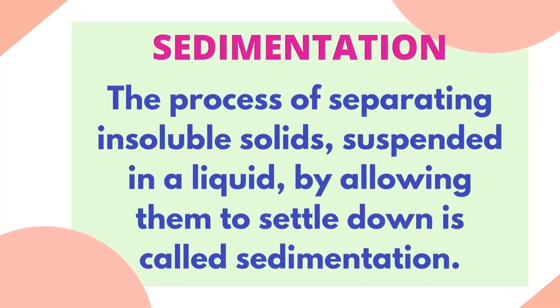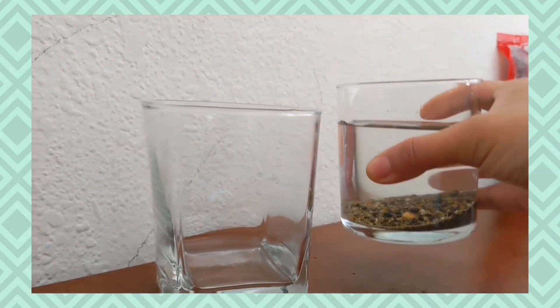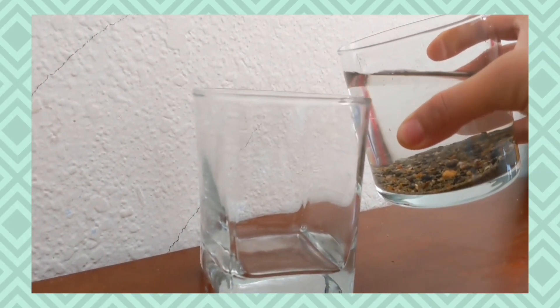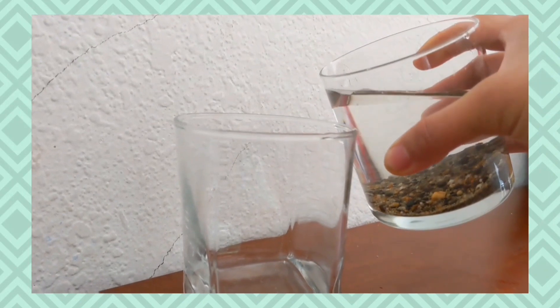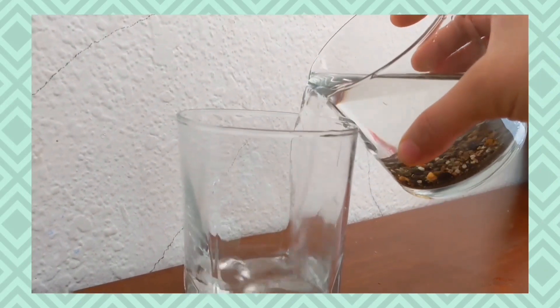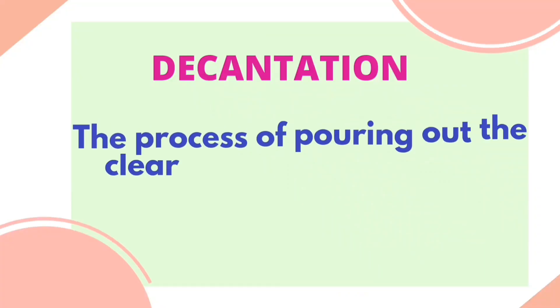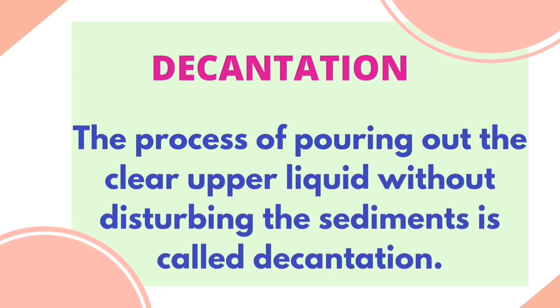Now slightly tilt the glass without disturbing the water. Let the water from the top flow into another glass. The process of pouring out the upper clear water without disturbing the sediments is called decantation.